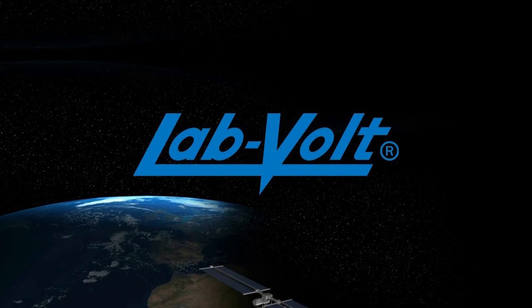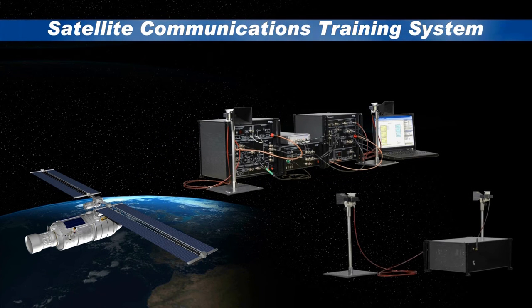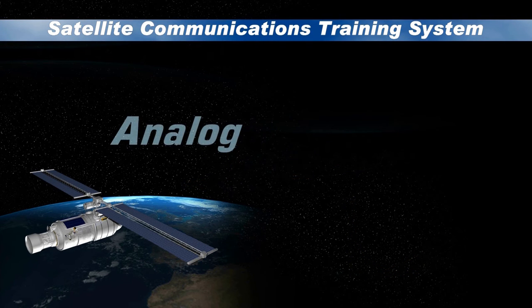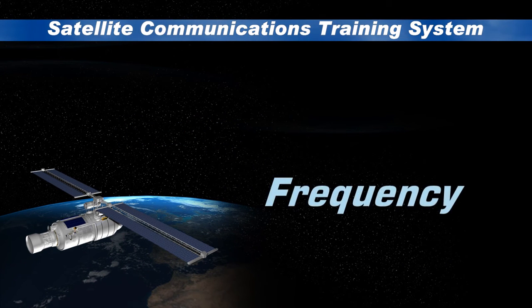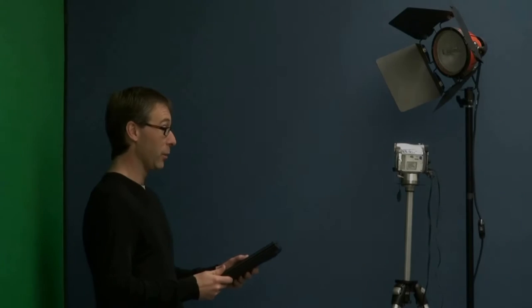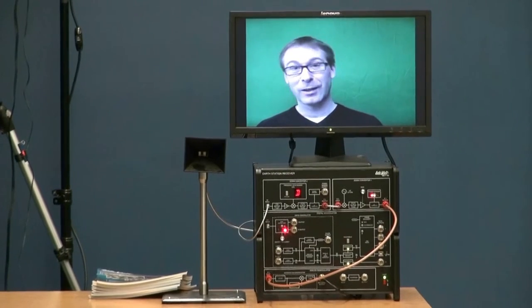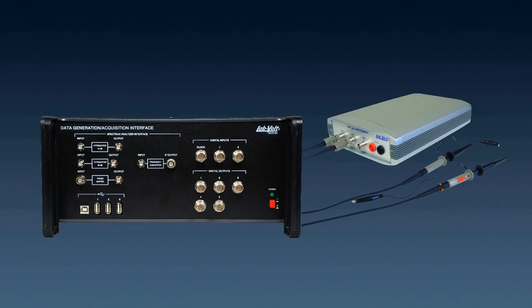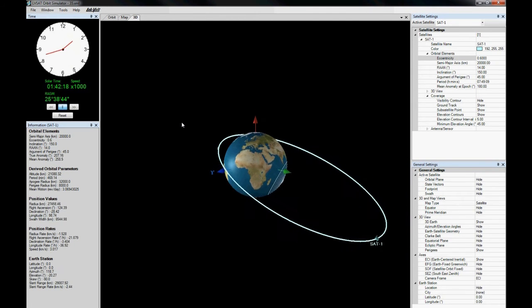LabVault is proud to present a new pedagogical way to bring satellite communications training into your classroom. Specifically designed for hands-on training, the system covers modern satellite communication technologies including analog and digital modulation. It is designed to use realistic satellite uplink and downlink frequencies at safe power levels and to reflect the standards commonly used in modern satellite communication systems. It consists of an earth station transmitter, a satellite repeater, an earth station receiver, an optional instrumentation and telemetry package, and the LVSAT software suite including an orbital mechanics simulation software.